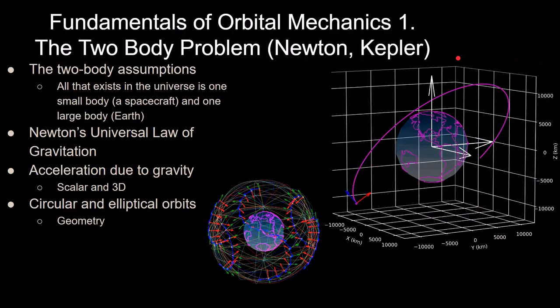So the first video in this series of the fundamentals of orbital mechanics, in this one we'll be going over the two-body problem, and we're going to start with the two-body assumptions where in the two-body problem we assume that all that exists in the universe is one small body like a spacecraft and one large body like the Earth, as is shown in the plot on the right.